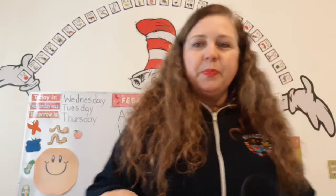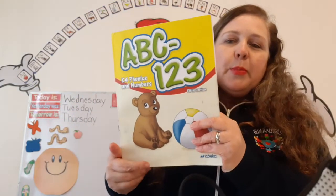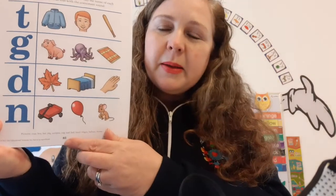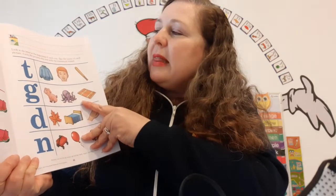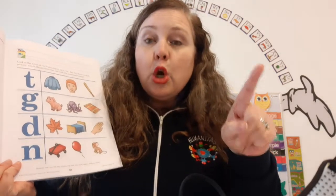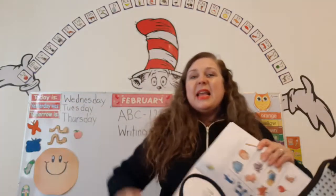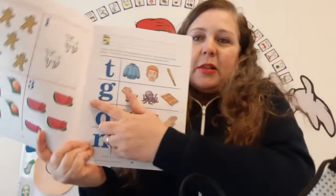Now, let's look up here — it says ABC, 1-2-3, page 83. So let's get our ABC 1-2-3 book out and open up to page 83. Make sure to write your name nice and neatly at the top of the page. It says: look at the letter at the beginning of each row, say the name of each picture, and circle the pictures that end with the consonant sound — not the beginning, the end. So you have to listen to the last sound.